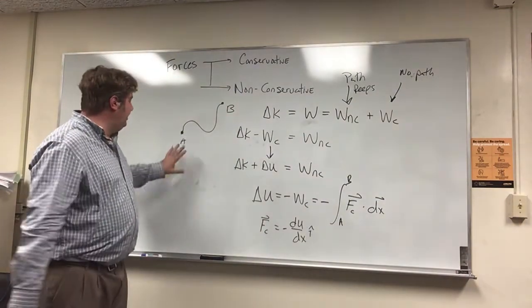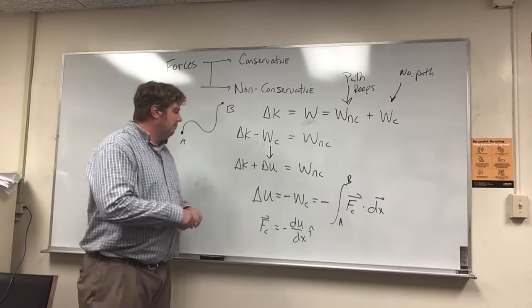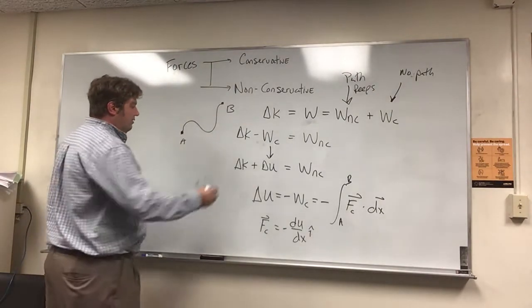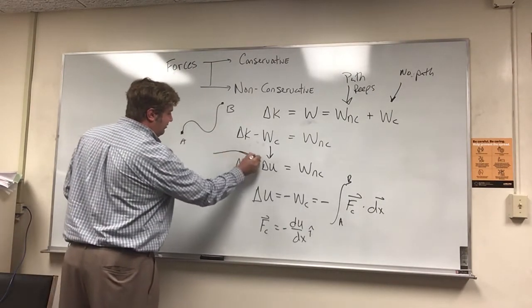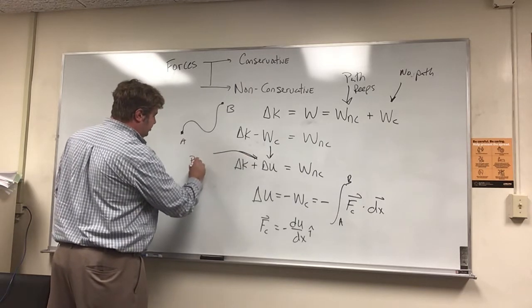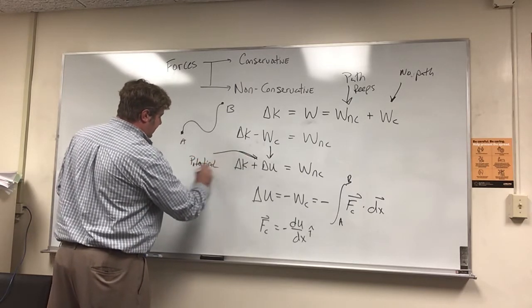So these A and B tend to be the endpoints of our path. This new quantity we've described is the potential energy.